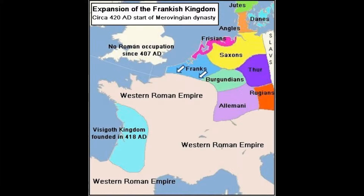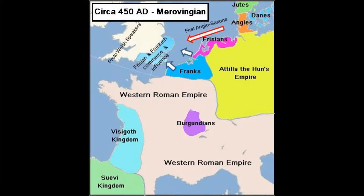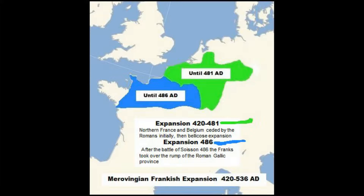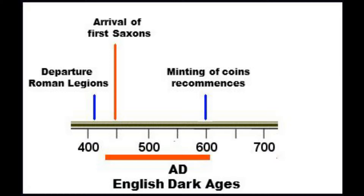To better understand the history of Dark Age England we need to look at England's contemporary neighbours. Undoubtedly the big boy on the block for the period of the English Dark Ages was the Merovingian Frankish Kingdom — they were after all just 30 kilometres away across the English Channel. We need to define the Dark Ages. The beginning could be counted as circa 430 AD, a generation or so after the departure of the last two Roman legions, and the end around 600 AD when we start seeing coins being minted once again in what was the Roman province of Britannia.